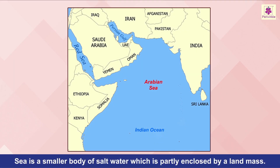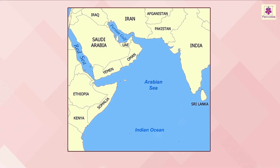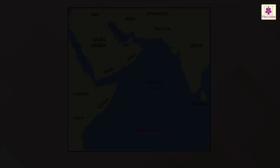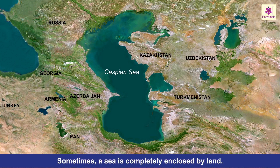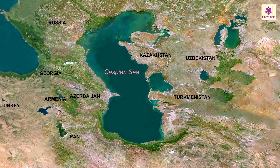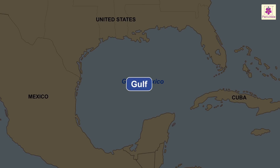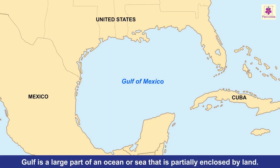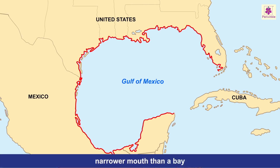A sea is a smaller body of salt water which is partly enclosed by a landmass. It is connected to an ocean. Sometimes a sea is completely enclosed by land, for example the Caspian Sea. A gulf is a large part of an ocean or sea that is partially enclosed by land. It has a narrower mouth than a bay.